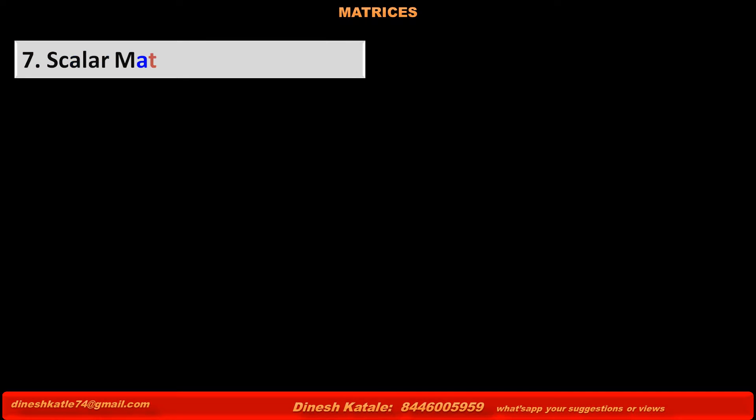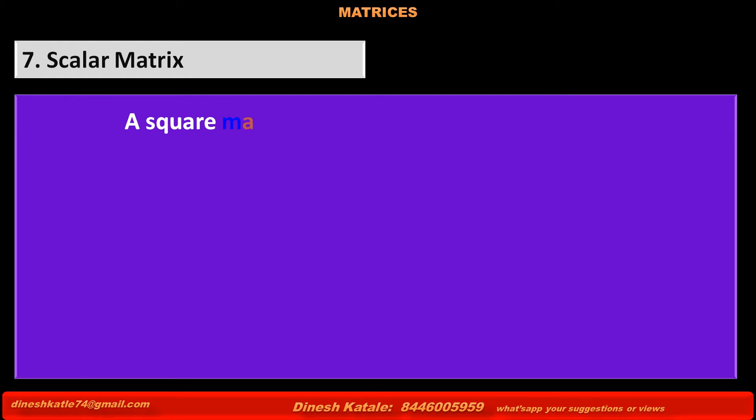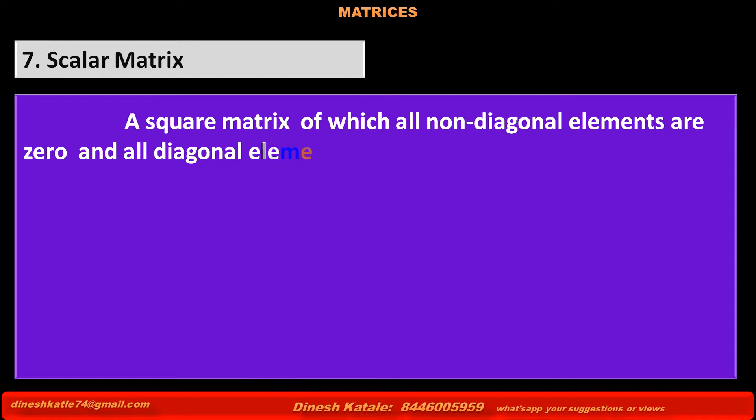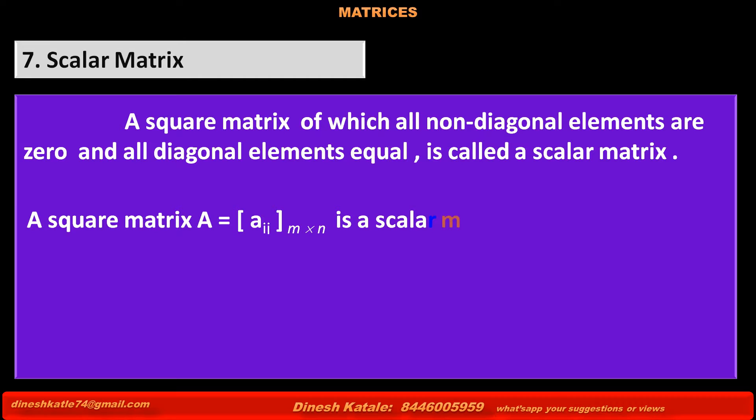Seventh type is scalar matrix. A square matrix of which all non-diagonal elements are zero and all diagonal elements are equal is called a scalar matrix.